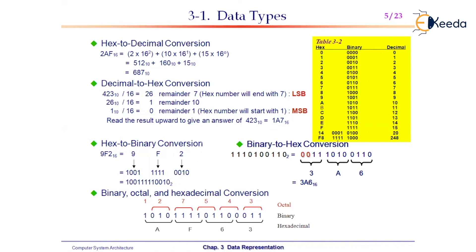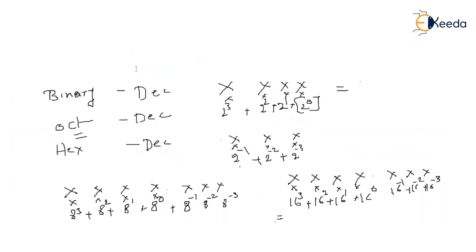For hexadecimal to binary conversion, take 9AF and identify the binary equivalent of each digit. Each hexadecimal digit maps to exactly 4 binary digits: F = 1111, A = 1010, and 9 = 1001.